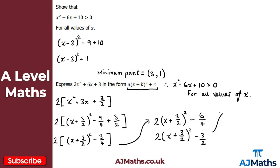You could note the values of a, b, and c if you wanted: a = 2, b = 3/2, and c = minus 3/2. That's our solution, and that brings us to the end of this video. In the next video we're going to take a look at introducing the discriminant.